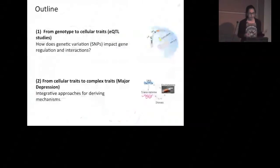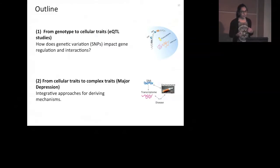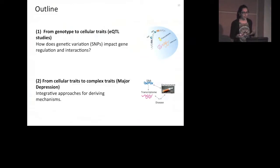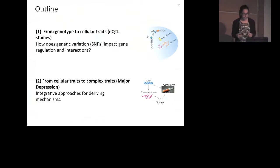In this talk I'll tell you about two projects addressing these challenges. In the first, I'll discuss combining genetics data with gene expression data to better understand the consequences of genetic variation in biological systems, particularly at expression levels, highlighting the problem of confounding factors. In the second part, I'll describe an integrative study combining different data types in the context of major depression, with the goal of deriving mechanisms that give us insight into this disease.